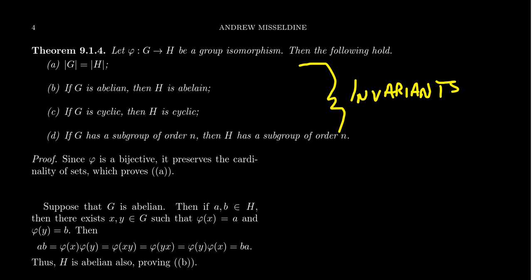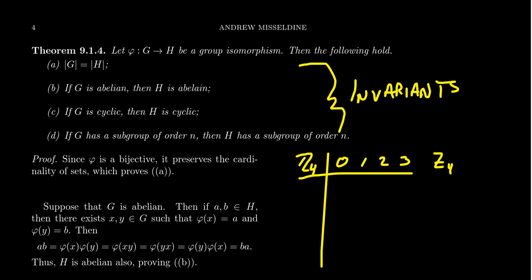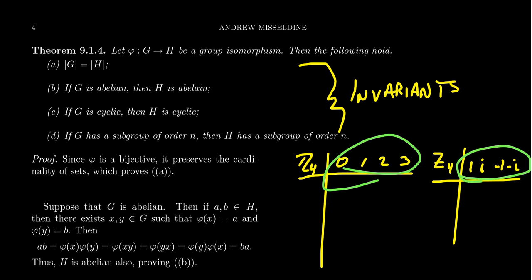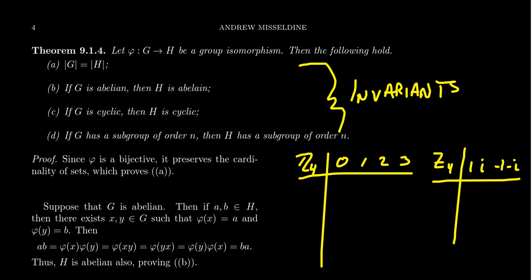When two groups are isomorphic, we're not saying they're equal as sets — there could be some cosmetic differences. For example, the group Z4 under addition has elements 0, 1, 2, 3, and this is the same group as the fourth roots of unity: 1, i, -1, and -i. Clearly there are some differences: the names of the elements, the labels themselves, and even the name of the operation — one is addition, the other multiplication. These are all cosmetic, linguistic differences. But the algebra of the two is going to be the same, and that's where this idea of invariance comes into play.